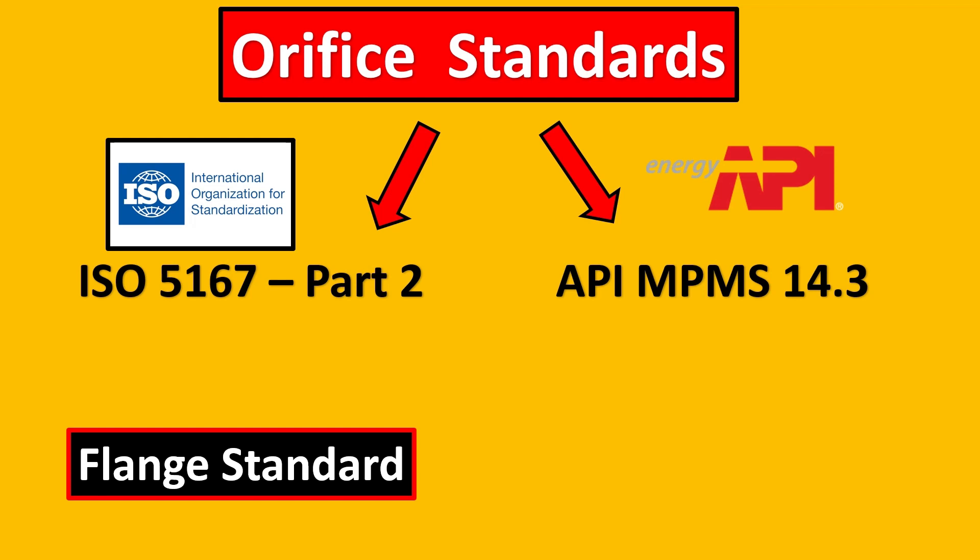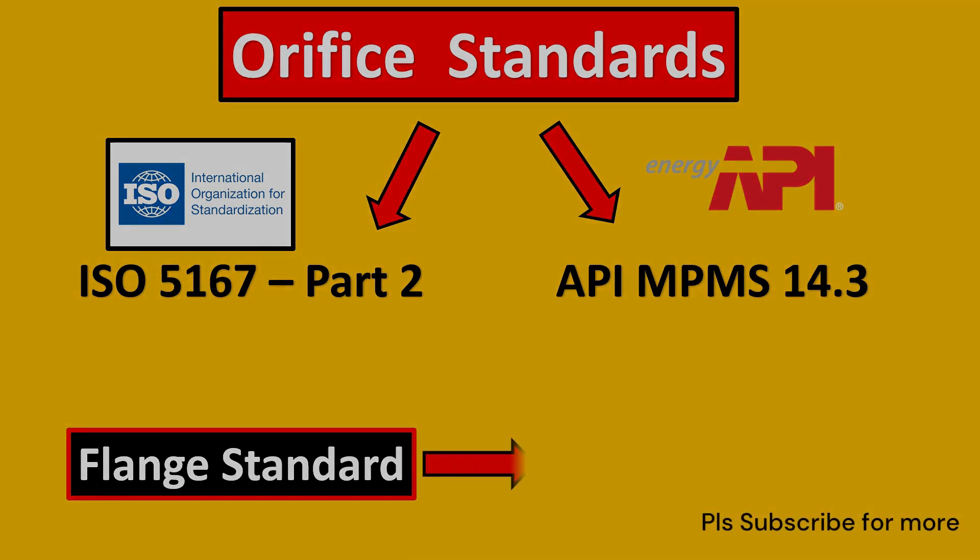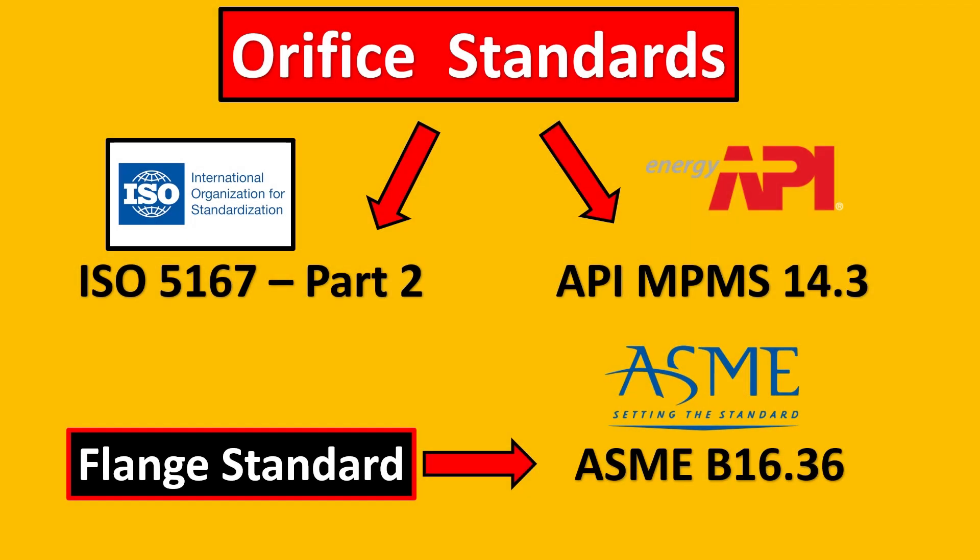And the second important thing is flange standard. So orifice flanges are special. They have holes drilled into them. They have jack screw etc. So for that you have ASME B16.36 which especially caters to orifice standard.